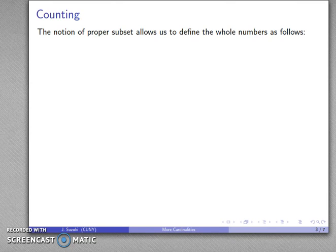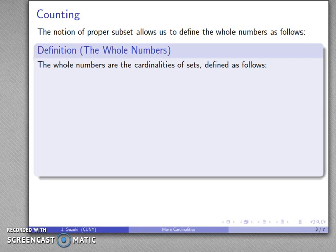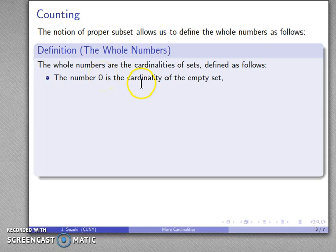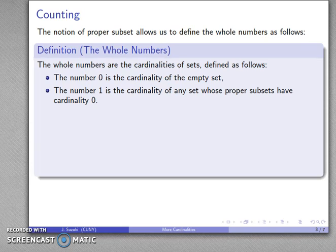Now that we have this notion of proper subset, we can define the whole numbers as follows. The whole numbers are the cardinalities of sets. The number zero is defined as the cardinality of the empty set. The number one is the cardinality of any set whose proper subsets all have cardinality zero.